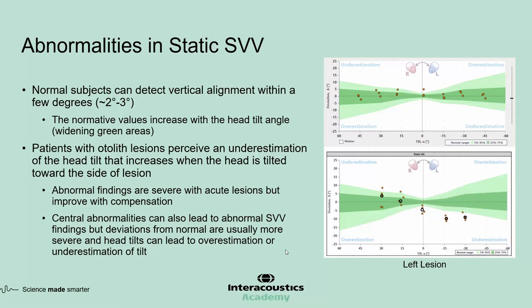Normal subjects can detect vertical alignment within a few degrees, maybe around two to three degrees. The normative values increase with the head tilt angle, as you can see with the widening green areas — these are the 75% and 95% confidence limits around the mean. Patients with otolith lesions perceive an underestimation of the head tilt that increases when the head is tilted toward the side of lesion.